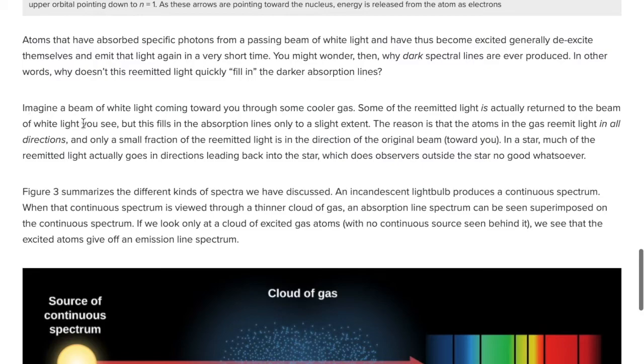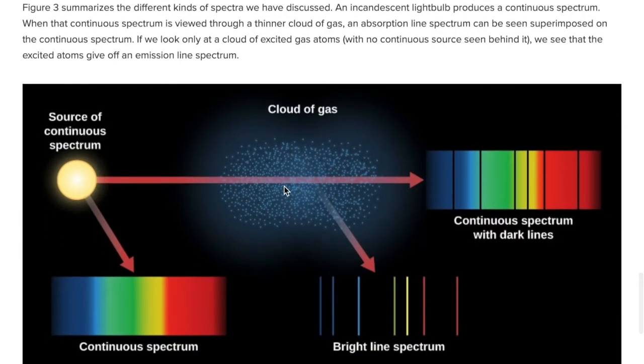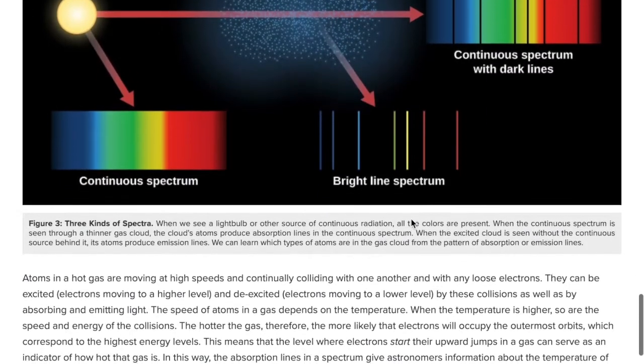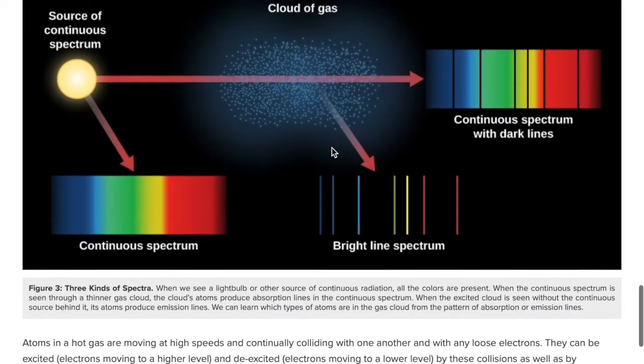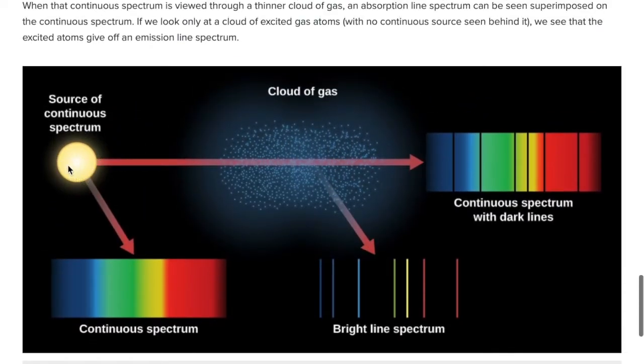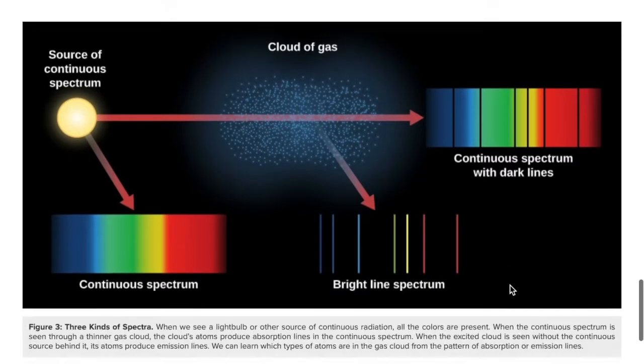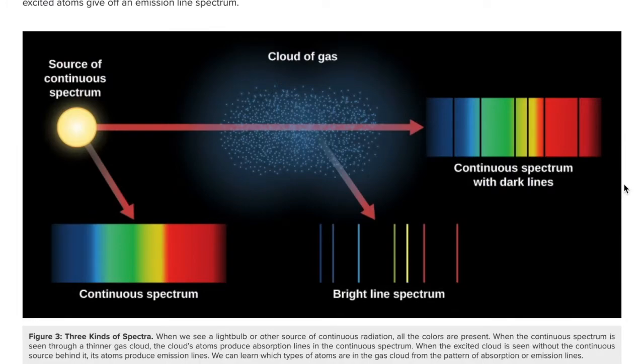Yeah, see, this is how they do it. Imagine a beam of white light coming toward you through some cooler gas. Some of the re-emitted light is actually returned to the beam of white light you see, but it fills in the absorption lines only to a slight extent. Yeah, see, this is how they think they do it. Source of continuous spectrum, cloud of gas, so they shine the light through the gas. That's not what happened, that's not what's happening in the sun. Mostly the light is emitted from the gas. The gas itself is glowing. Am I wrong? It's a completely different thing. You can't, you couldn't do this unless you were actually, unless this was a nuclear fusion reaction. And you have, and the light from that, it would have to be an actual fusion bomb. You'd have to use a fusion bomb to find the spectrum or to replicate it. Therefore, if they haven't done a fusion bomb Fraunhofer lines, then they have nothing to compare the sun to. All they have is light shine through lukewarm gas.